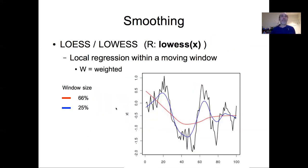A generalization of the polynomial approach that actually combines the idea of the polynomial with the idea of a moving average is the idea of a local regression within a moving window. If you fit a regression model to the points within a window, then move that window a bit and fit another regression model, and connect all those regression models together, you get this idea of a LOESS curve, which is a local regression within a moving window.